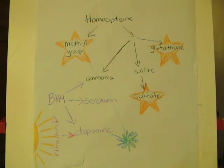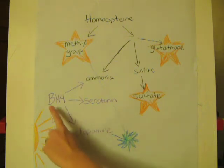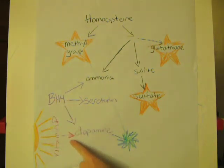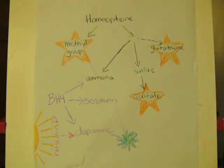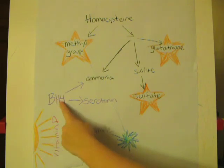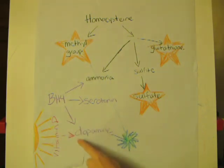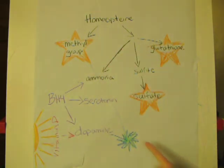Now if you have low BH4, but you also have low methyl groups or slow activity of COMT, then you might not notice the effects of low dopamine. If you have normal BH4 but low methyl groups or slow action of COMT, then you might end up with really high dopamine — and that can be just as much of an issue as too low dopamine.